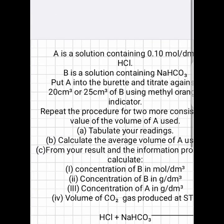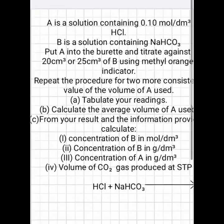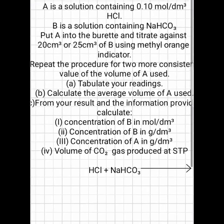A is a solution containing 0.1 mol per dm cubed of HCl. Then B is a solution containing NaHCO3. So here the concentration of B is hidden. Put A into the burette and titrate against 20 or 25 cm cubed of B using methyl orange indicator.